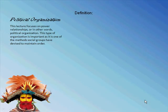This lecture will be on political organization. We're going to look at power relationships, and this is an important type of organization because it's one of the ways that we maintain order. The definition of political organization is the existence of groups for purposes such as public decision-making and leadership. This is basically the way power is embedded in a society.